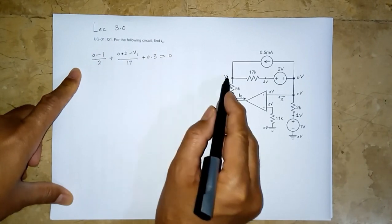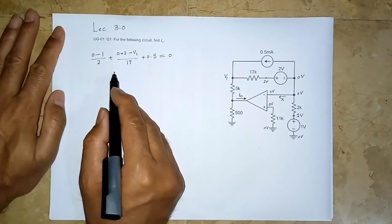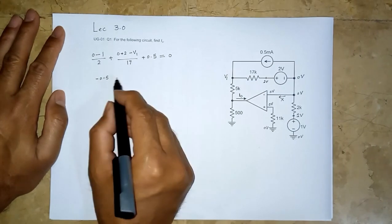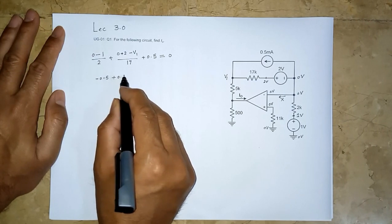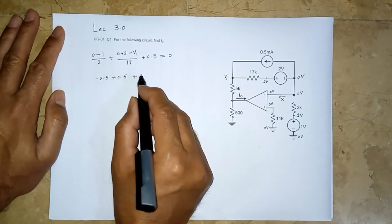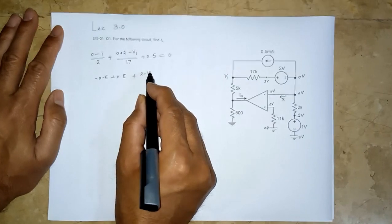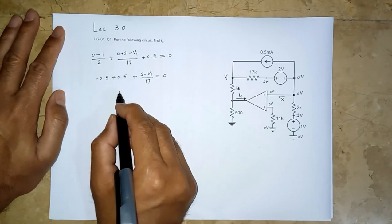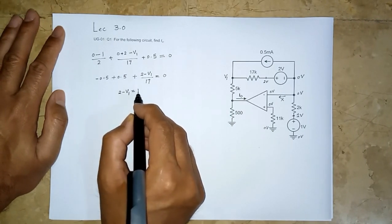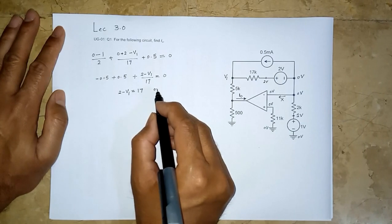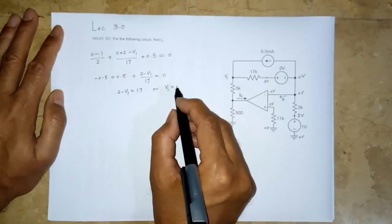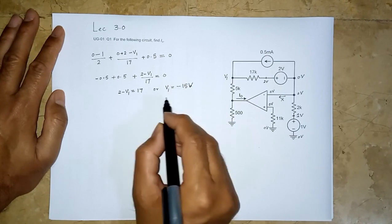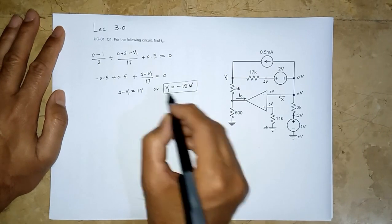So, for example, we have minus 0.5 here, plus 0.5, and plus 2 minus v1 over 17 is equal to 0. So this cancels out, and we get 2 minus v1 is equal to 17. Or so we got v1 is equal to minus 15 volts.